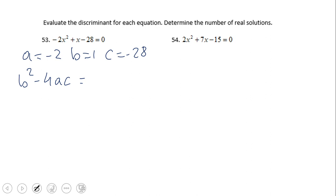Okay, so as you notice, a is negative 2, b is 1, and c is negative 28. So we're gonna have here b squared, 1 squared, minus 4 times negative 2 times negative 28.